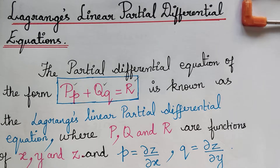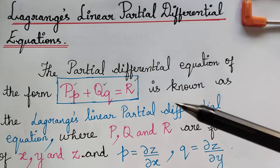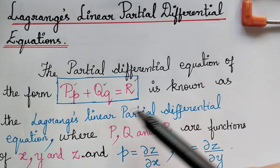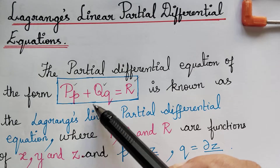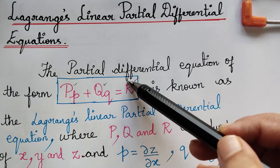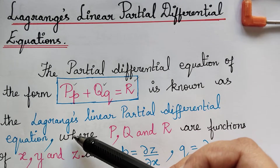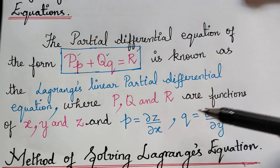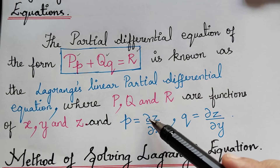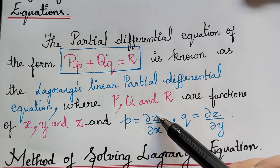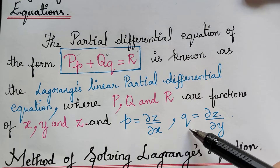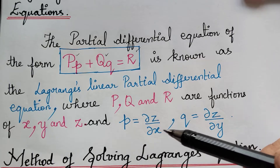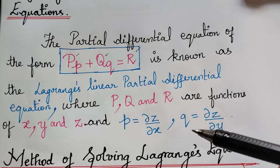Dear students, under the topic partial differential equations, we are going to learn Lagrange's linear partial differential equations. By definition, the partial differential equation of the form capital P multiplied with small p plus capital Q multiplied with small q is equal to capital R is known as Lagrange's linear partial differential equation, where P, Q and R are functions of x, y and z. Small p equals dou z by dou x (partial differentiation of z with respect to x) and small q equals partial differentiation of z with respect to y, which we have already seen from the formation of PDE by eliminating arbitrary constants and arbitrary functions.